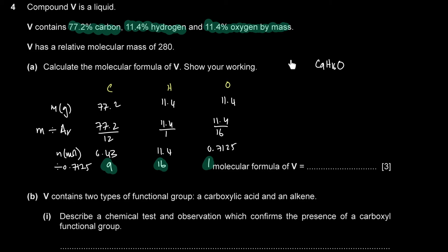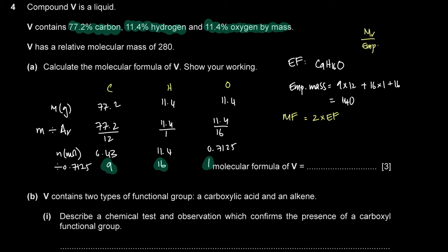The empirical mass of C9H16O is (9×12) + (16×1) + 16 = 140. Since the molecular mass is 280, which is twice 140, the molecular formula is 2 × C9H16O = C18H32O2.